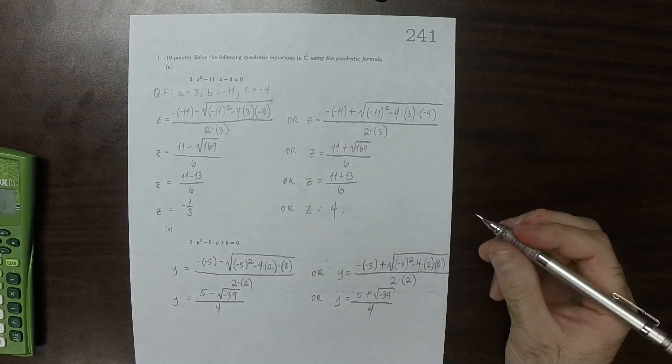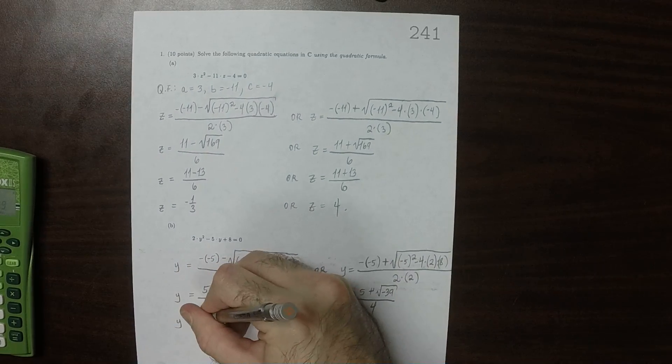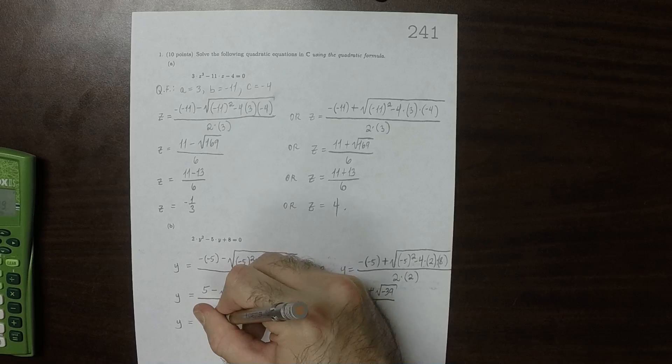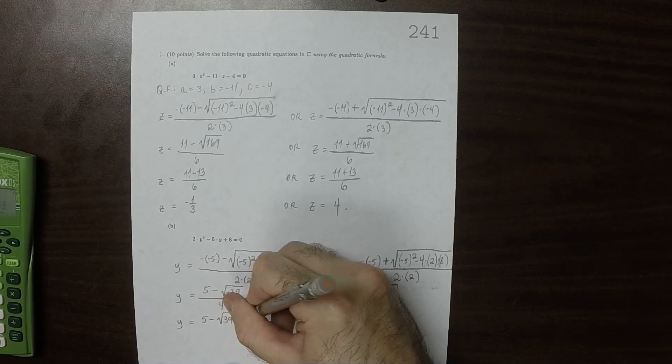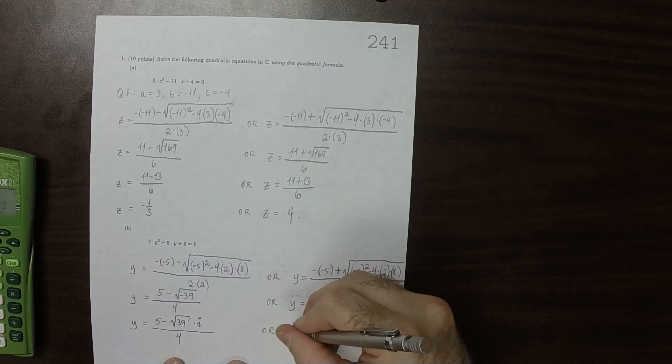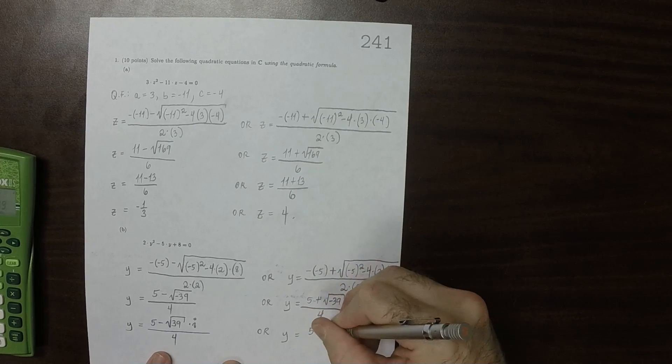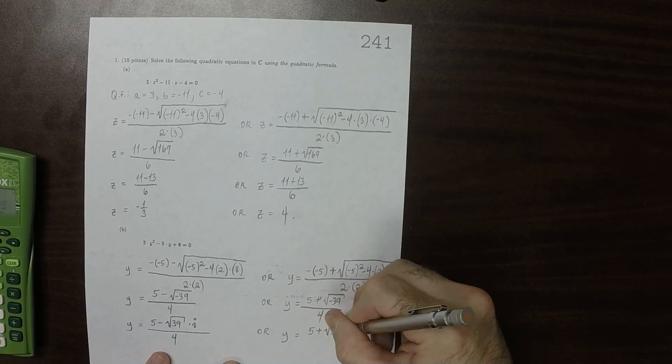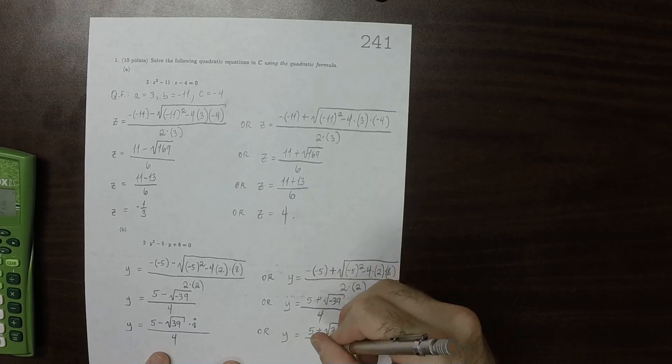The negative comes out as i, so this would be y is 5 minus the square root of 39 i over 4. Or y is 5 plus the square root of 39 over 4. The i comes out, over 4.